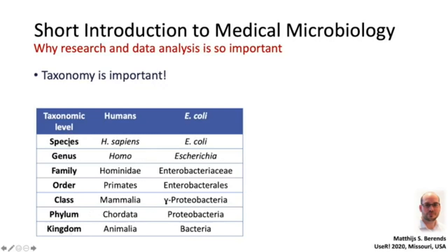Here's an example of the different taxonomic levels, from kingdom to species, with some levels in between. You see an example for humans: we are Homo sapiens, genus Homo, and we all go down to the kingdom Animalia. If we look at E. coli, a bacterium, then you see it's part of the kingdom of bacteria, and here are all the different levels until we get to the genus level Escherichia and the species level coli.